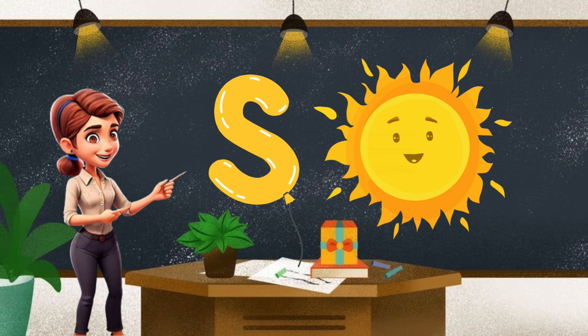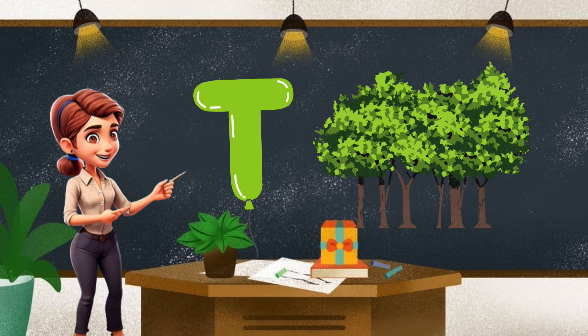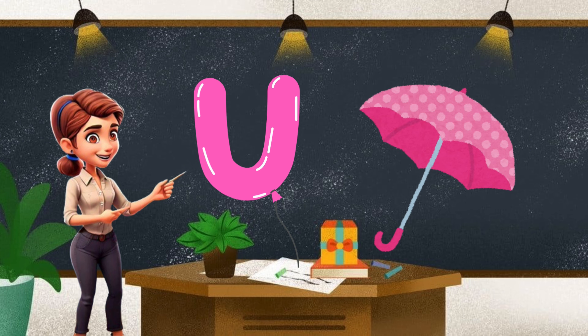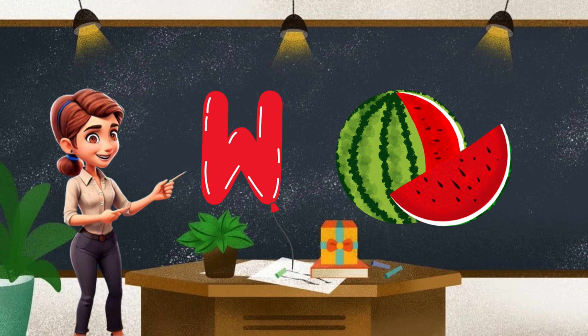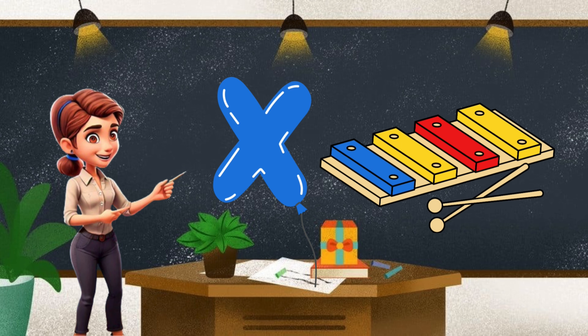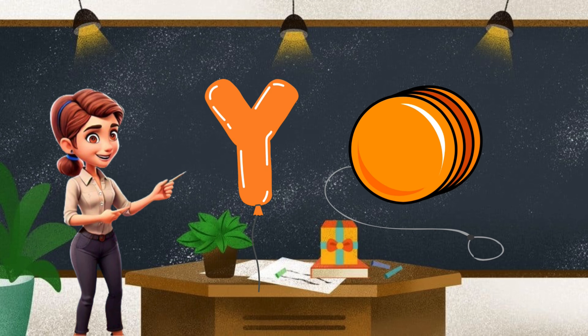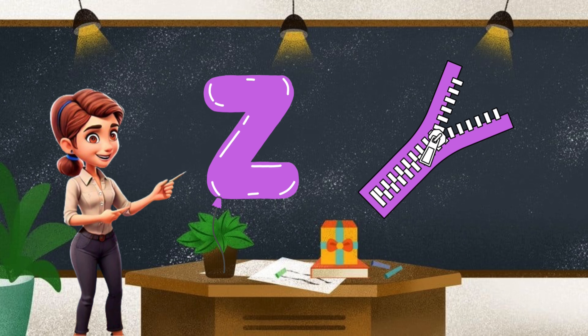R for Rubik's cube. S for sun. T for trees. U for umbrella. V for van. W for watermelon. X for xylophone. Y for yo-yo. Z for zip.